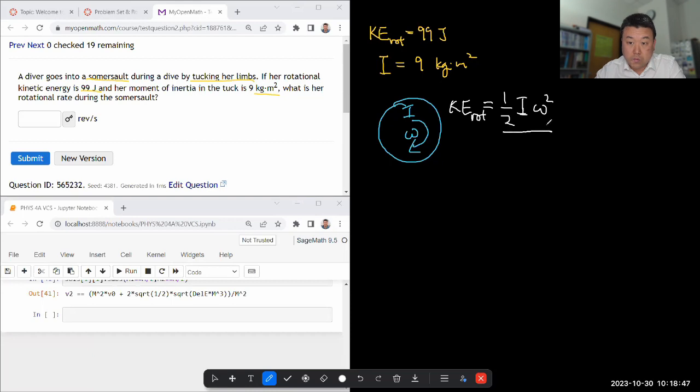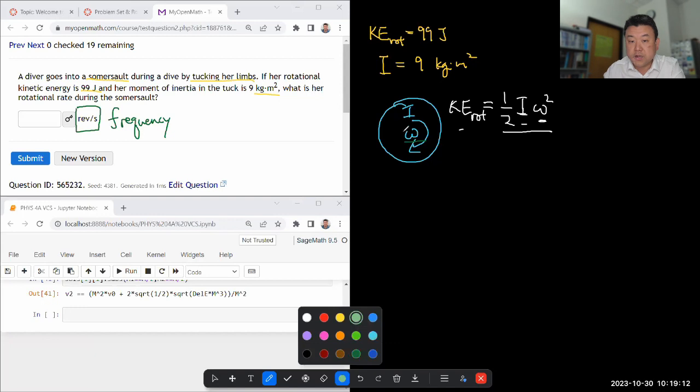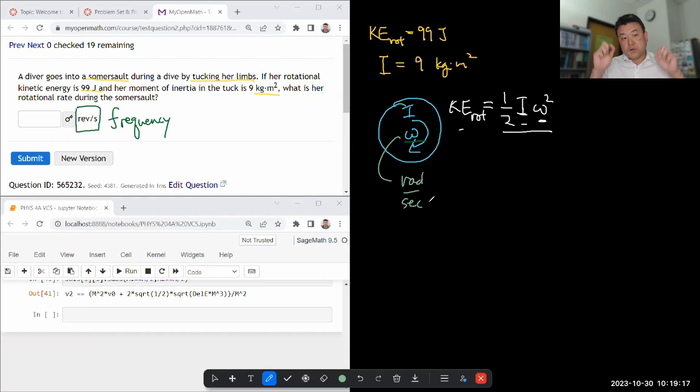So once you are given the rotational kinetic energy and rotational inertia, then you can solve for omega. The only thing you have to be careful here is they are wanting the answer in units of revolutions per second, which is a frequency unit. So when you calculate omega here, that won't be in revolutions per second. That will be in radians per second.